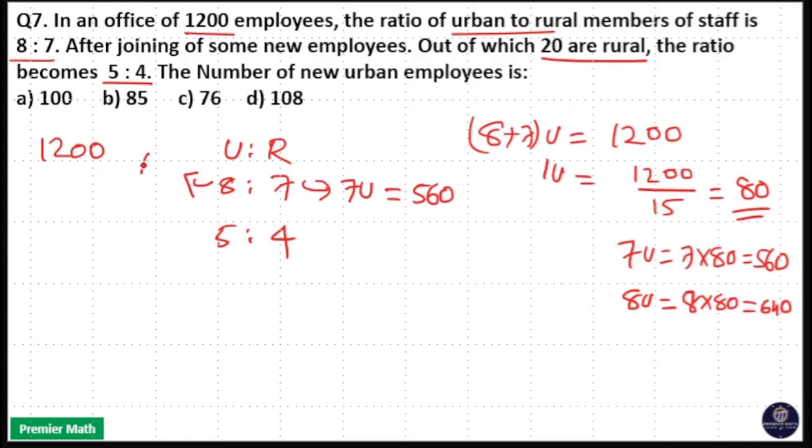8 units is 640. So initially there were 640 urban people and 560 rural people.